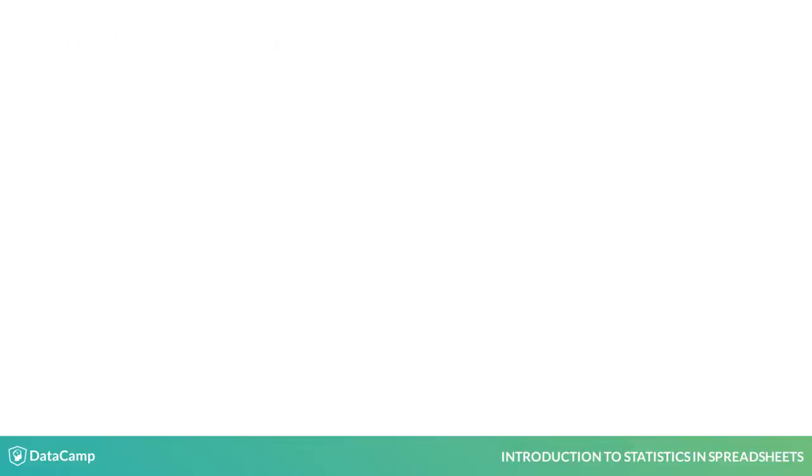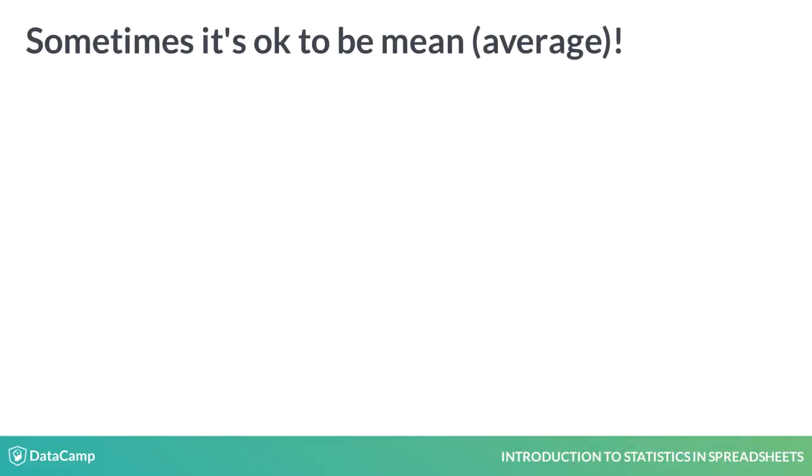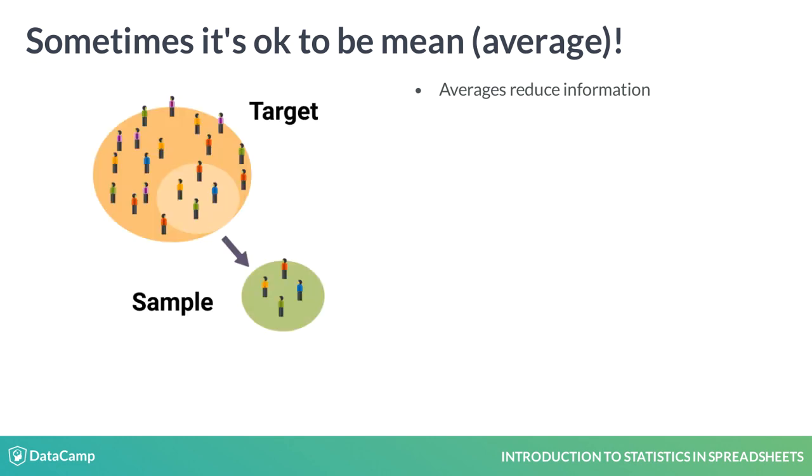Let's begin with averages. An average is an information reduction technique. You start with a data population, which may be too large to understand. So you need a way to reduce the amount of information into a comprehensible amount.